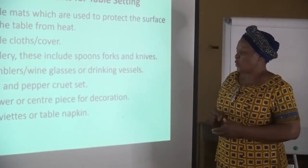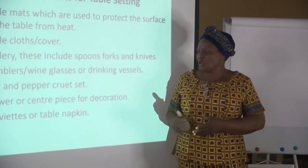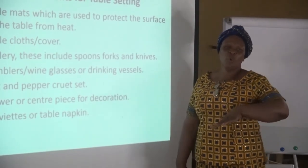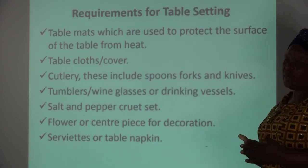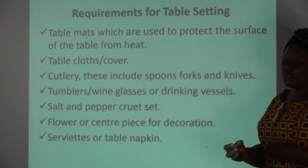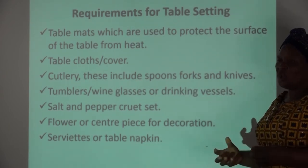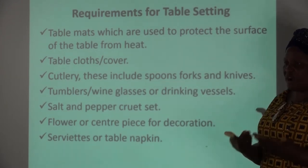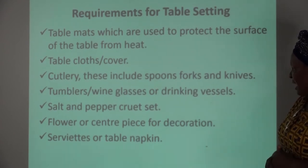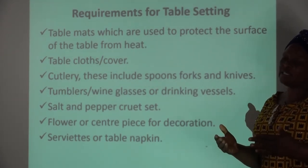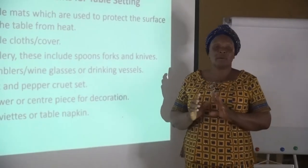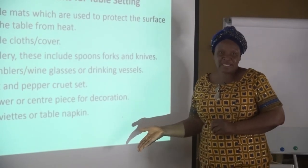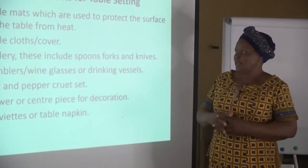Then we have a flower or centerpiece. Another name for flower is centerpiece, and it is for decoration. Any flower used should not be too long so that guests can see each other. Natural flowers are preferred, not plastic or rubber ones, so they give out fragrance during eating. Then we have serviettes or table napkins, which are for protection and should be folded neatly, either placed by the side of the table or inside the wine glasses.